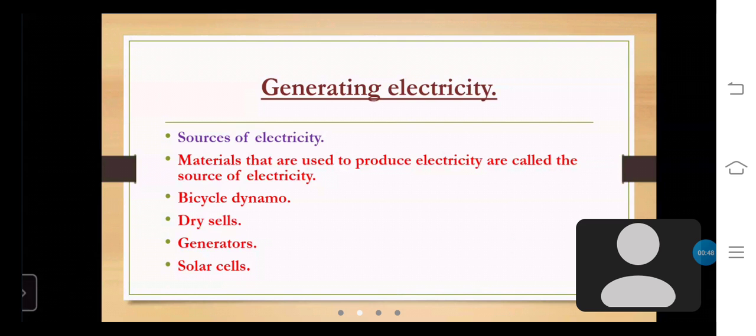Next, our topic is generating electricity. Sources of electricity: Materials that are used to produce electricity are called sources of electricity. Examples are bicycle dynamo, dry cells, generators, and solar cells.